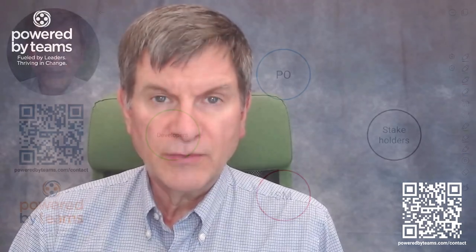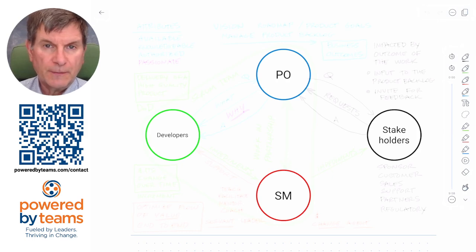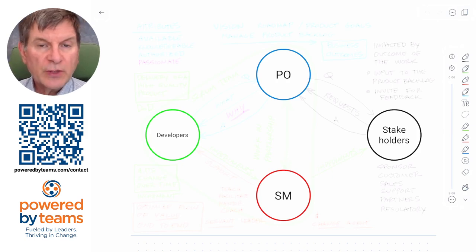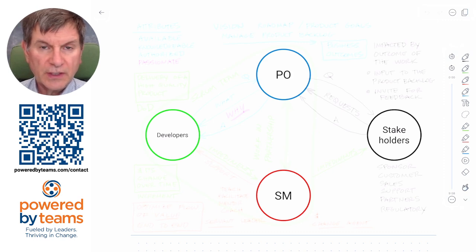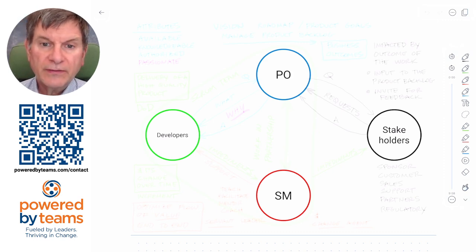Today's topic is going to be the Scrum team and the accountabilities, and I'm going to explain how the accountabilities in a Scrum team interact in order to deliver increments of value every sprint. So if you want to follow along, you can grab a sheet of paper and draw four circles on it, kind of the way that I've illustrated here, with product owner at the top, developers at the left, scrum master at the bottom.